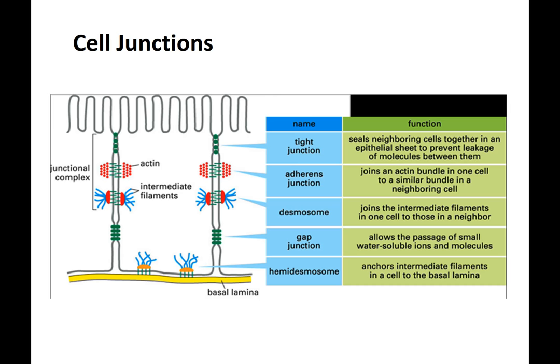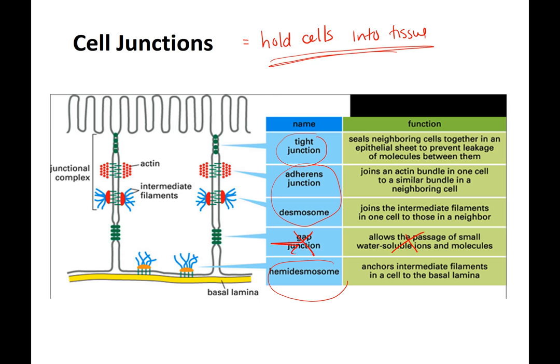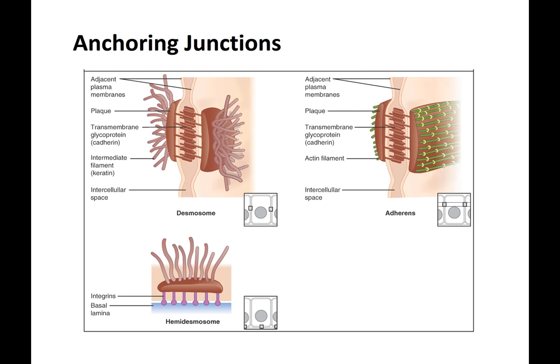Another group of cell junctions helps hold cells into tissue. Gap junctions allow the passage of small molecules but do not hold cells into tissue. Tight junctions and anchoring junctions help with that. The three types of anchoring junctions are desmosomes, adherins, and hemidesmosomes. Hemidesmosomes hold the cell to the external environment.